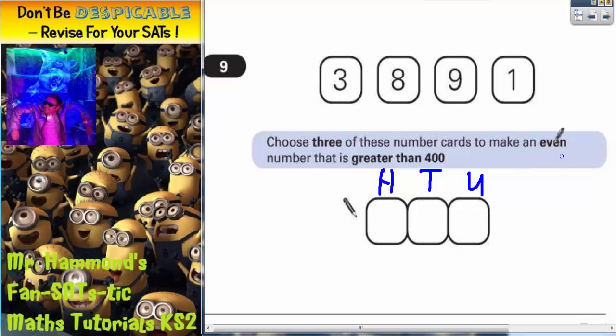Now the number that we make is going to have to be even, and it's got to be greater than 400. So if it's going to be even, the units digit will have to be even.